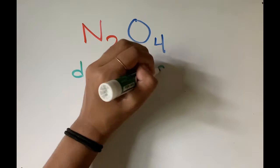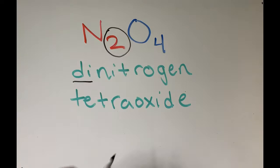You try with N2O4. Ready? You should have gotten dinitrogen tetraoxide. Di, as we went over, means two, and tetra is the prefix for four.